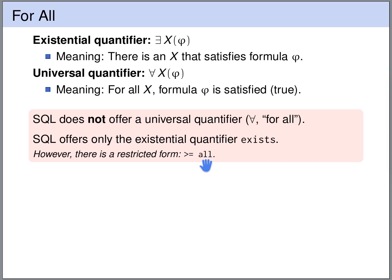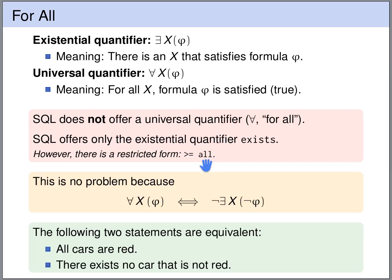So is this a problem that SQL does not offer a universal quantifier? Fortunately it's not a problem, because we can translate the universal quantifier into existential quantification. If you remember your logic course, then you will remember that for all x phi is equivalent to saying that there does not exist an x such that not phi.